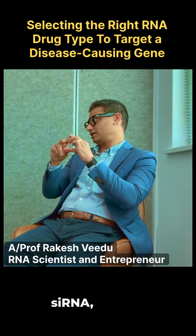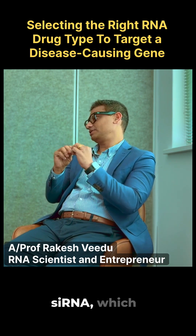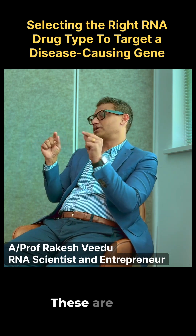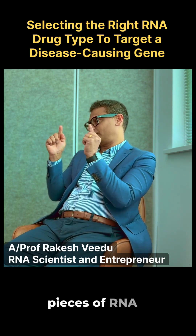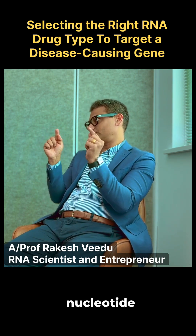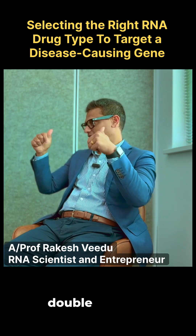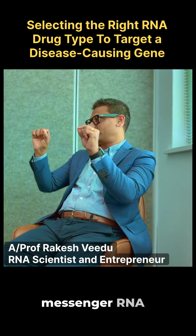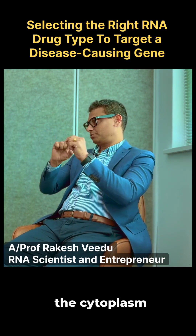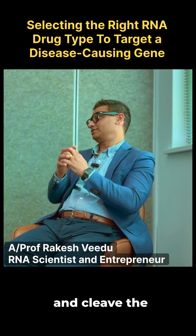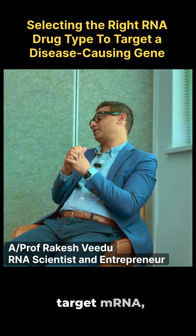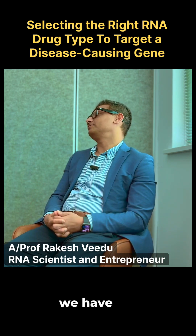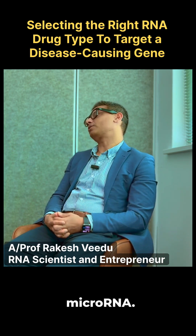We also have siRNA, which is short interfering RNA. These are short pieces of RNA of about 21 nucleotides, double-stranded, which target messenger RNA in the cytoplasm and cleave the target mRNA.